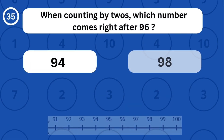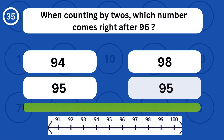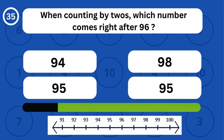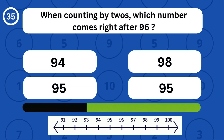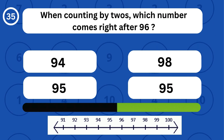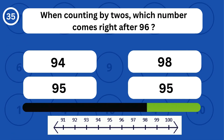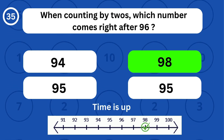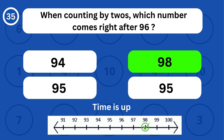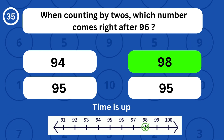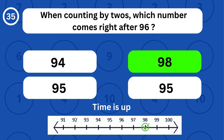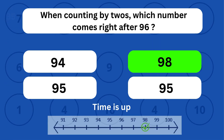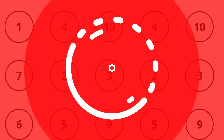When counting by twos, which number comes right after 96? When counting by twos, the number 98 comes right after 96.